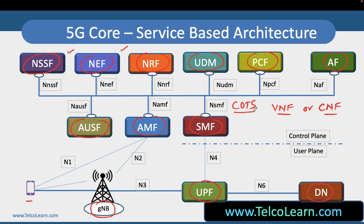In the upcoming videos we are going to talk about all these network functions one by one. All these network functions have some interfaces which are referred to as SBI, or Service-Based Interfaces, where they provide services to other network functions with the help of RESTful API architecture. All these network functions communicate with each other by using HTTP/2 protocol, where all the 3GPP specific data is written in JSON format. So we are moving away from traditional protocol architectures in telecom and getting into web-based architecture like HTTP/2.